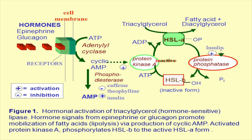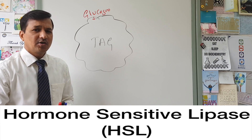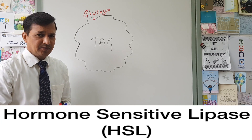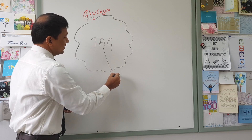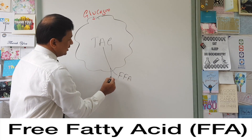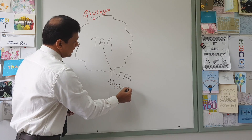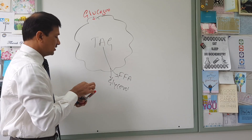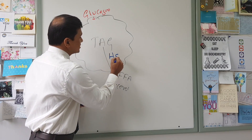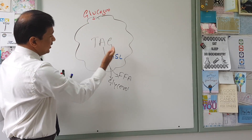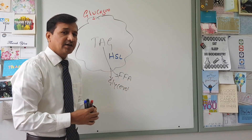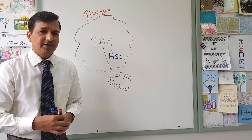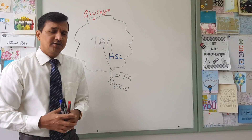The activated adenylyl cyclase enzyme increases cyclic AMP, and that cyclic AMP further activates protein kinase A (PKA). PKA phosphorylates hormone-sensitive lipase (HSL). Hormone-sensitive lipase then breaks down triacylglycerol and releases free fatty acids and glycerol. The free fatty acids enter the bloodstream and are carried by albumin to other tissues, while glycerol goes to the liver and undergoes gluconeogenesis to make glucose.